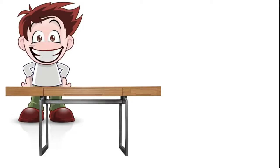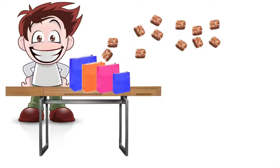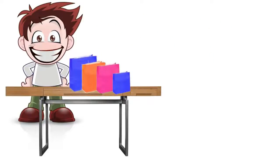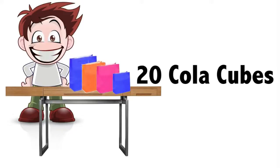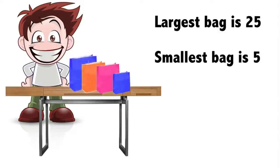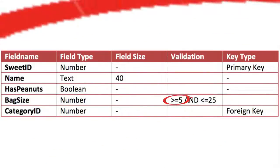Having fields that have a range is also a good idea. Bob sells his sweets in bags of different sizes depending on the type. For example, his English toffee is sold in a bag containing 10 toffees and his cola cubes are sold in a bag of 20. The largest bag contains 25 sweets and the smallest just 5, so the range on the field 'bag size' is from 5 to 25.